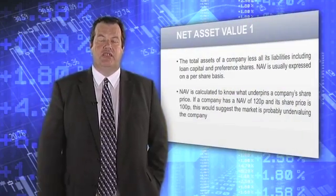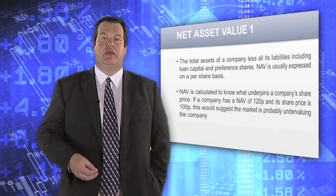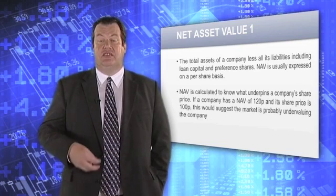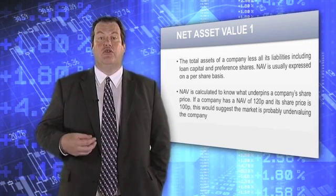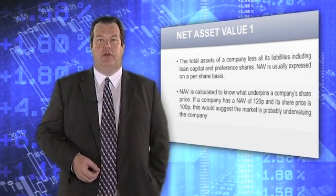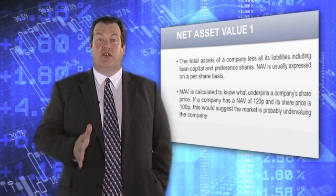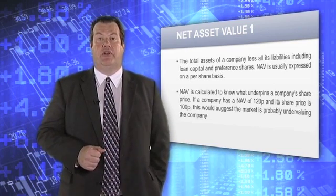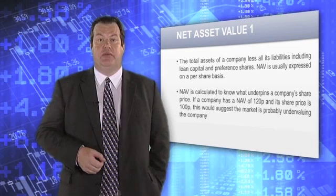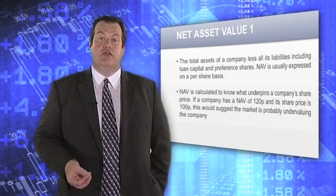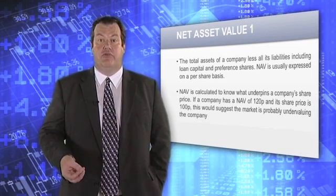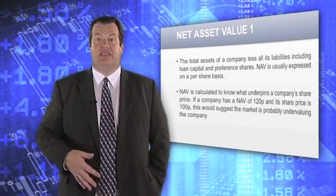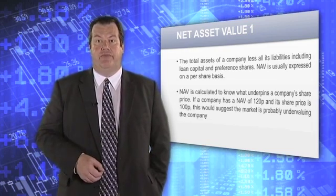Our second metric to look at the valuation of a company is the net asset value of the share. You take the assets of the company and deduct all the liabilities — this includes any bank loan debt or loan stock that needs to be repaid. Effectively, it's the closing-down valuation of the company: what is left when every liability has been paid off. With that figure, you divide it by the number of shares in issue, and you have the net asset value of the share — the NAV.